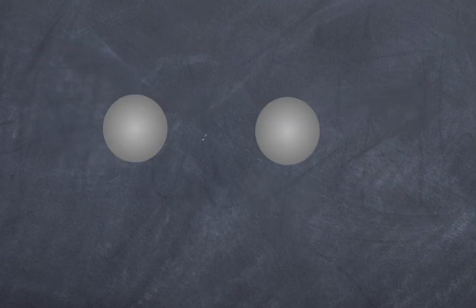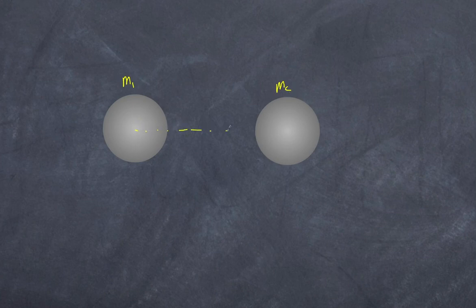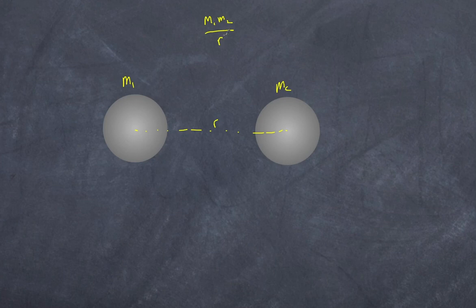Let's have an example. I have two masses here — m1 and m2 — and the distance between them is r. Let's make this force equal to 1 newton. In other words, if we have m1 and m2 at a distance r, since F is proportional to m1 m2 over r squared, let's make this equivalent to 1 newton.